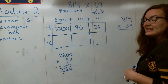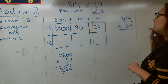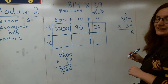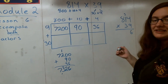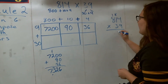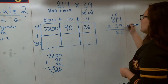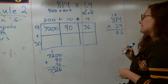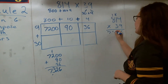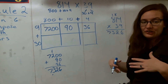Let's go ahead and add these: 0 plus 0 plus 6 is 6; 9 plus 3 gives me 12, carry the 1; 1 plus 2 is 3; and 7 plus nothing is 7. So my first partial product should be 7,326. Let's verify: 9 times 4 is 36, carry the 3, leave the 6. Then 1 times 9 is 9, and 9 plus 3 is 12, carry the 1, leave the 2. Then 9 times 8 is 72, plus 1 gives us 73. So we have 7,326 — these match, so I know I'm on the right track.